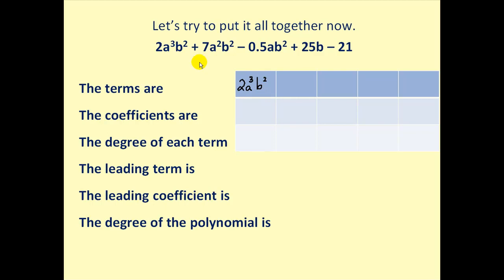2a³b² is our first term. 7a²b² is our second term. Our third term is negative 0.5ab². The fourth term is 25b, and the fifth term is negative 21.